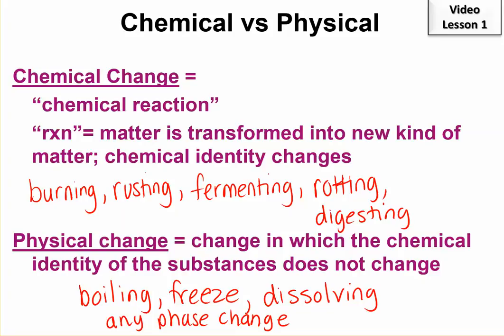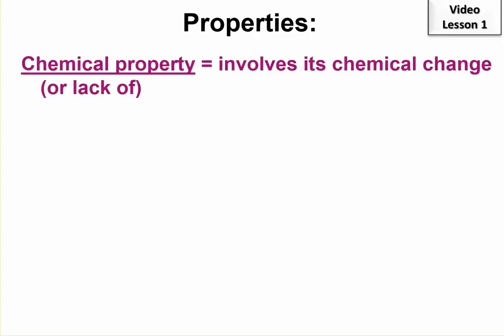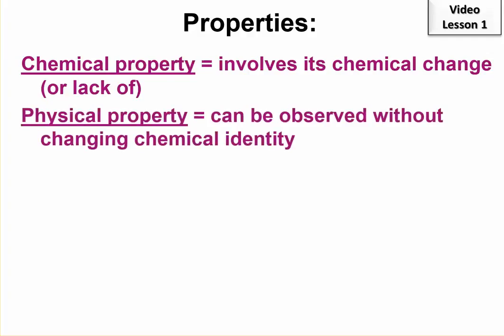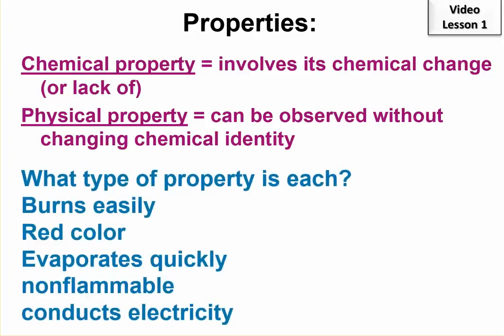We can also define these in terms of properties. In other words, we can talk about the substance's tendency to undergo a change. A chemical property tells about its tendency to have a chemical change, or the type of change it might have. So see what you can do with each of these. What type of property does each of these represent?